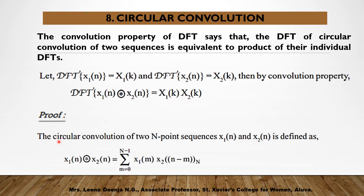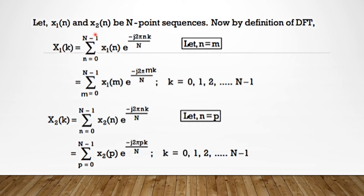Proof. The circular convolution of two N-point sequences x1(n) and x2(n) is defined as: sum from m equal to 0 to N minus 1 of x1(m) times x2((n minus m) mod N). Let x1(n) and x2(n) be N-point sequences. By the definition of DFT, X1(k) equals sigma from n equal to 0 to N minus 1 of x1(n) e raised to minus j 2 pi nk by N.